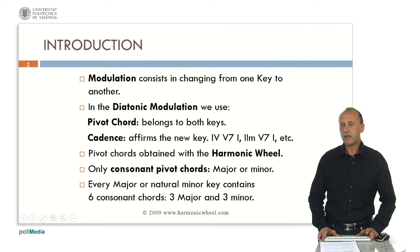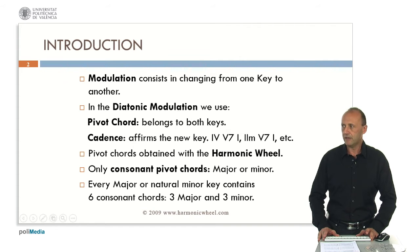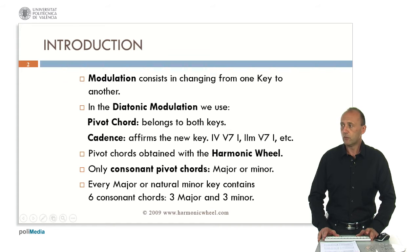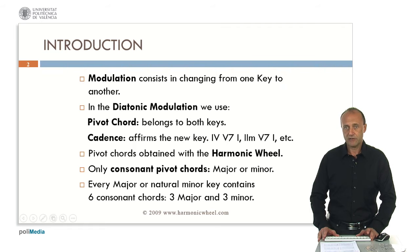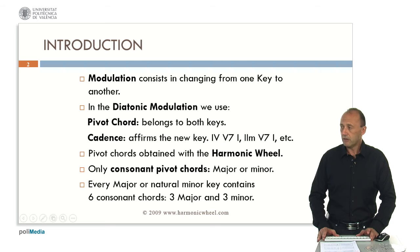Modulation consists in changing from one key to another. It is used in music to avoid monotony and to increase variety. There are several kinds of modulation. The diatonic modulation consists in using first a pivot chord, which is a chord belonging to both keys — the initial key and the final key — and then including a cadence to affirm the new key. The cadence can be a chord progression such as subdominant, dominant seventh, tonic, or for example second degree minor, dominant seventh, tonic, or other similar chord progressions.